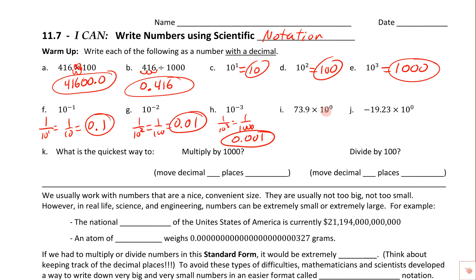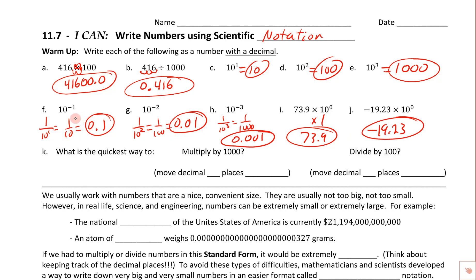For 73.9 times 10 to the 0, remember 10 to the 0 just means times 1, so this is going to be 73.9 — it doesn't change the number at all. And negative 19.23 times 10 to the 0 is just negative 19.23. On each one of these, we need to put the zero in front to make them technically correct. Keeping track of where the decimal is will be so important when we do today's assignment.